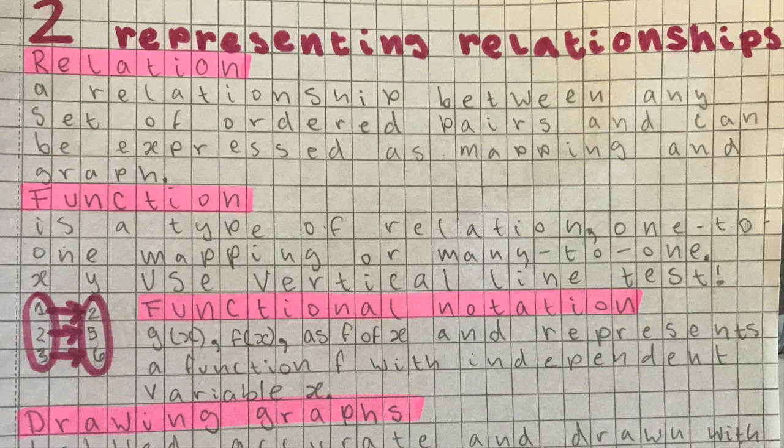Chapter 2 in total is about representing relationships, but Chapter 2.1 specifically is what is a function. First of all, we have to understand what a relation is. A relation is a relationship between any set of ordered pairs, and it can be expressed as a mapping or a graph. You have an X and you have a Y — you might get millions of Y values or millions of X values, but there is a relationship between these two sets of data.